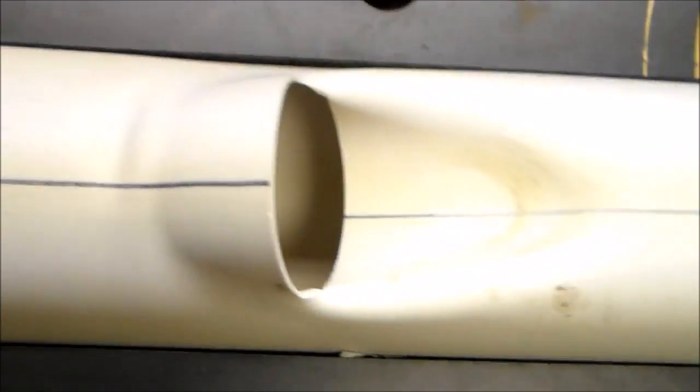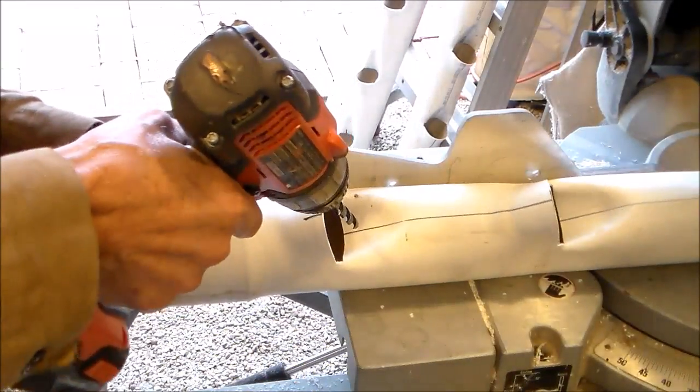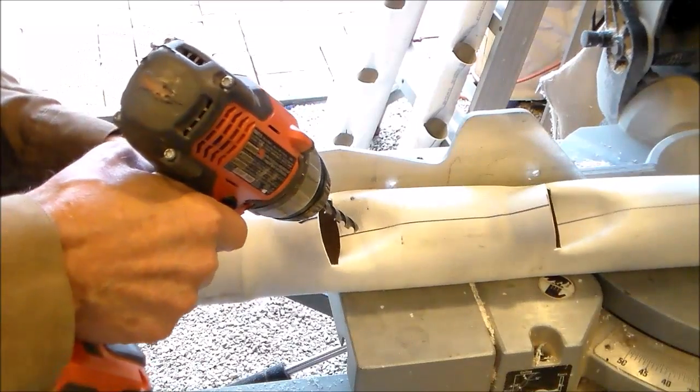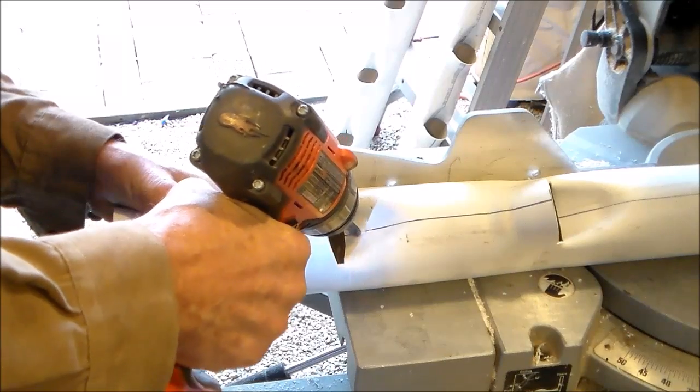Now all we have to do is put a wicking line in this so that we can be assured that the water will be flowing down the back of the net cups.